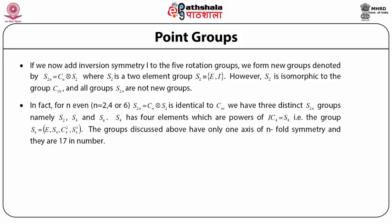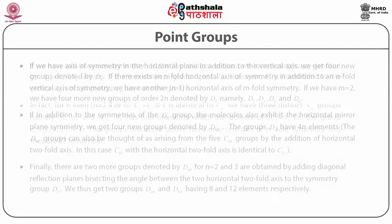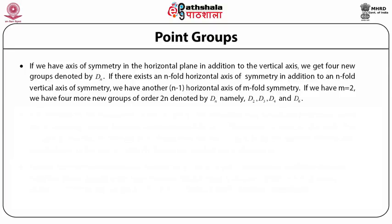The groups discussed so far have only one axis of n-fold symmetry and are 17 in number. There is no five-fold symmetry considered here. Some protein molecules have five-fold rotational symmetry, but we are not considering that. If we also have axes of symmetry in the horizontal plane in addition to the vertical plane, we get four new groups denoted Dₙ.